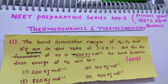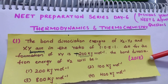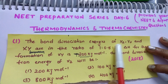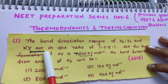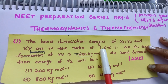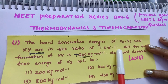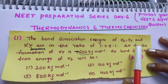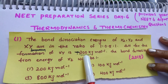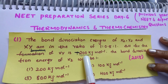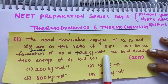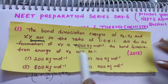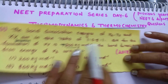Let us see the first question from 2018. The bond dissociation energies of X2, Y2, and XY are given in the ratio 1:½:1. Delta H for the formation of XY is minus 200 kilojoule per mole. The bond dissociation energy of X2 will be?